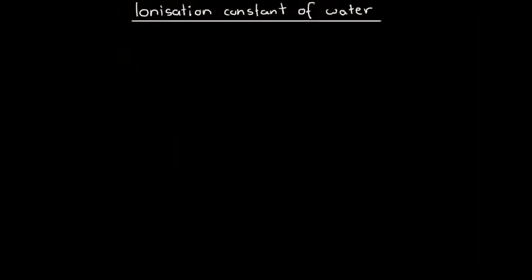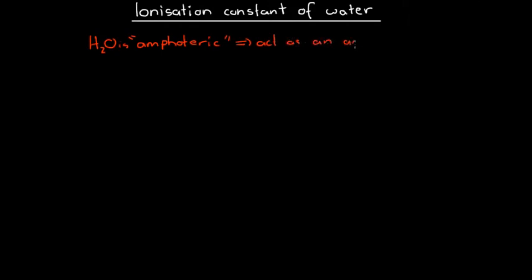In this video we're going to look at a very important number called the ionization constant of water. Before we get to what we mean by the ionization constant, we need to learn a little something about water molecules. Water is a substance that can be referred to as amphoteric — a substance that can act as an acid in some cases and act as a base in other cases. So water molecules can act as acids and bases in different circumstances, meaning water can both accept protons by acting as a base or donate protons by acting as an acid.